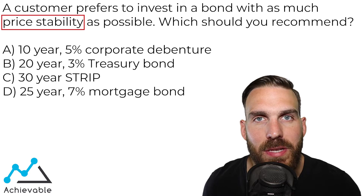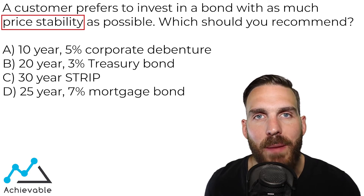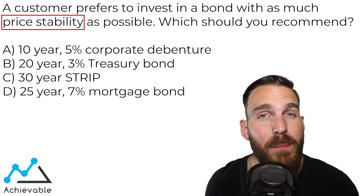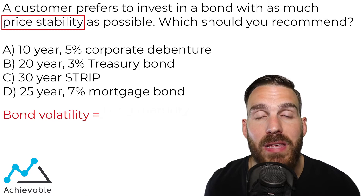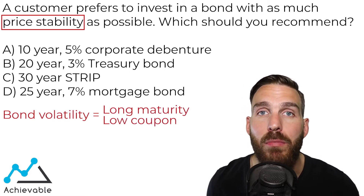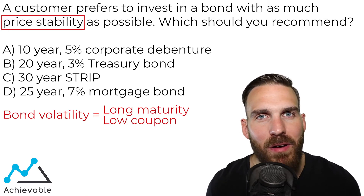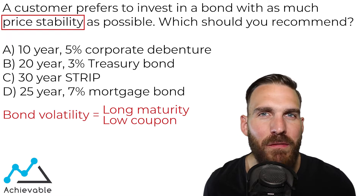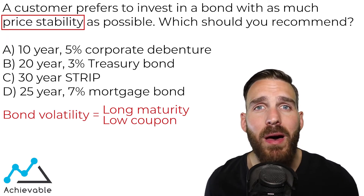This question focuses on stability of prices, but what we've covered in this chapter is bond volatility — meaning what type of bond moves the most in price. As we've learned, the bond with the longest maturity and the lowest coupon is the one that moves the most in price. With any investment, the more time involved, the more risk you face.